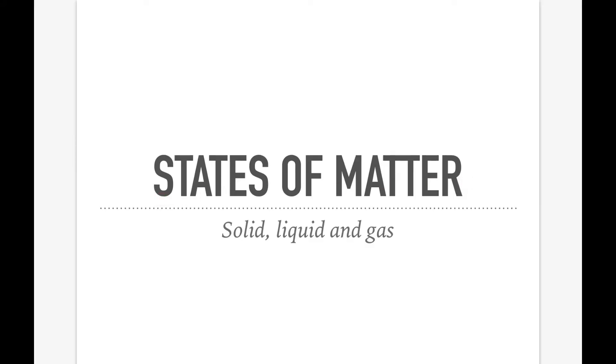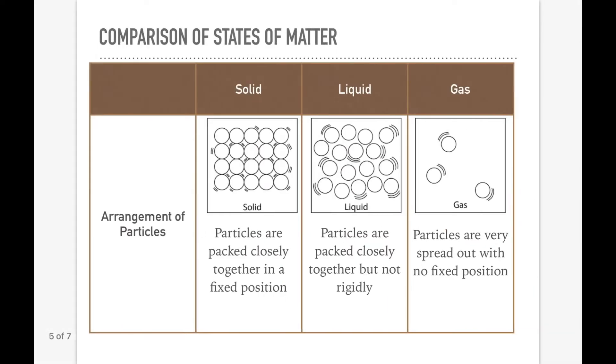States of matter can be divided into three states: solid, liquid, and gas. Let's compare from the arrangement of particles. For solid, the particles are very close together, closely packed together in a fixed position. You can see they are all arranged neatly and tightly.